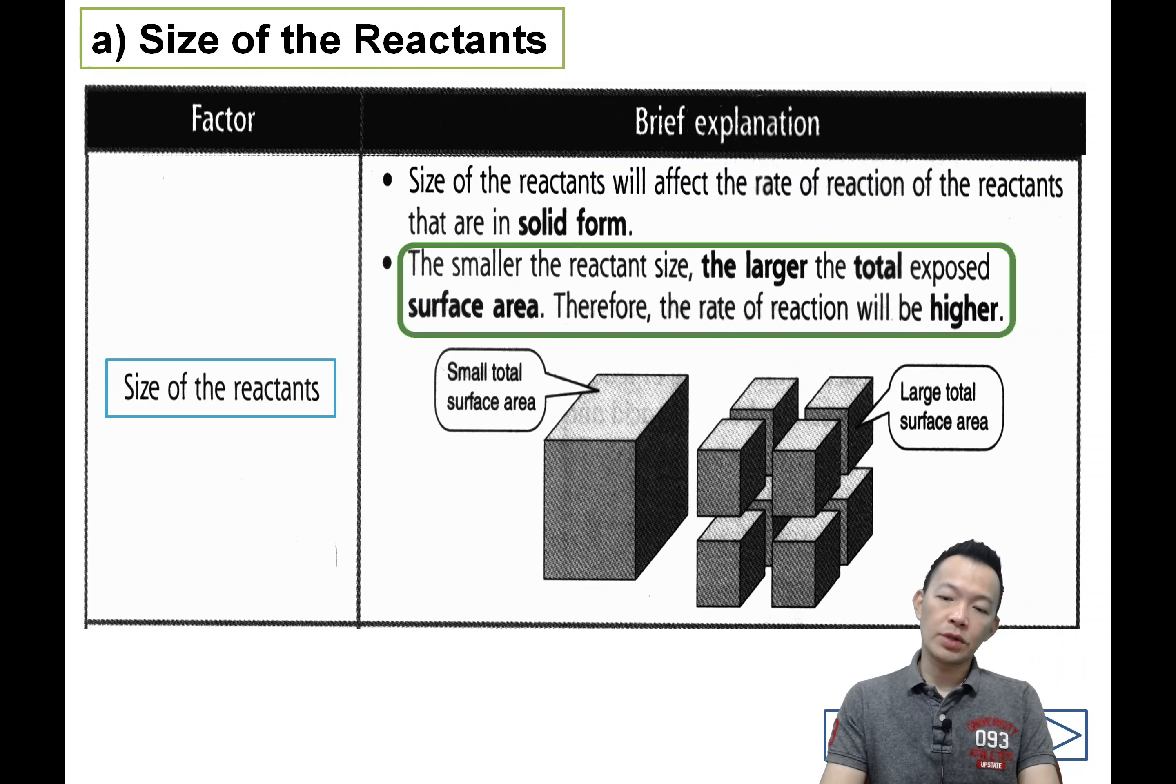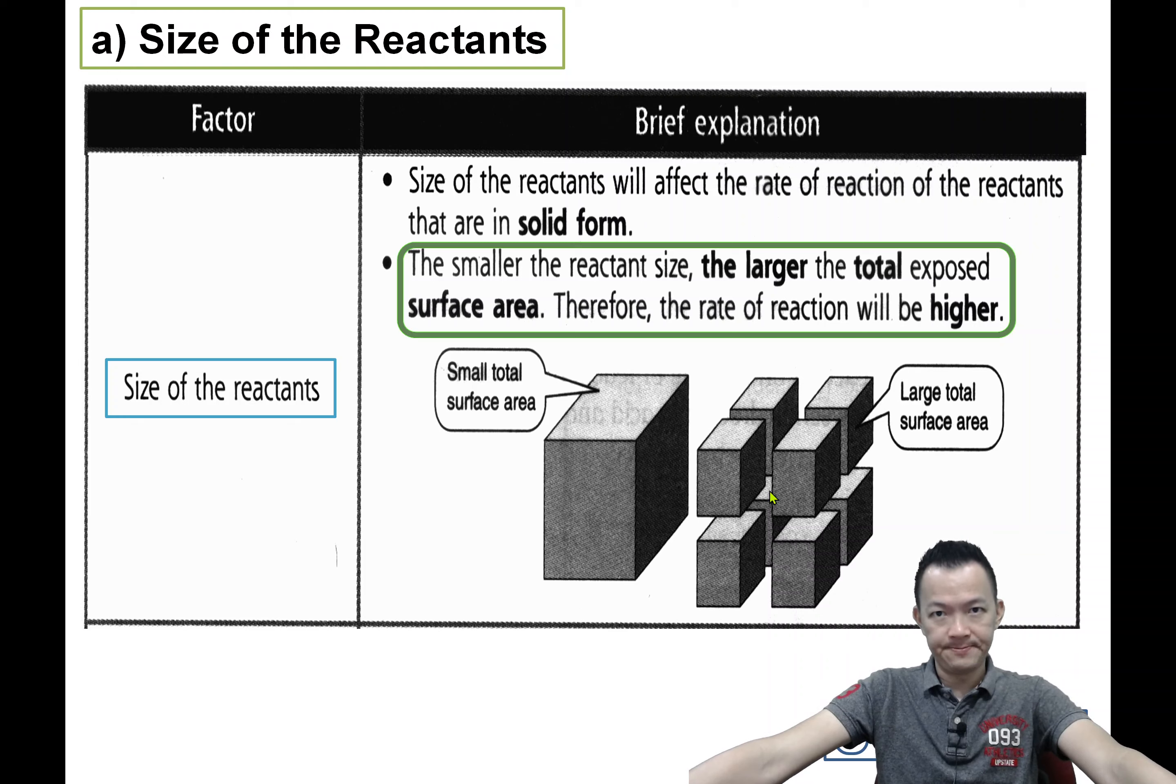Now understand, don't look at me, look here. So this is a small total surface area. The large reactant, big block, the total surface area is less. Compared to the small size of the reactant, the total surface area is bigger. So the smaller the size of the reactant, the bigger the total surface area, and more easier for the chemical reaction to take place.